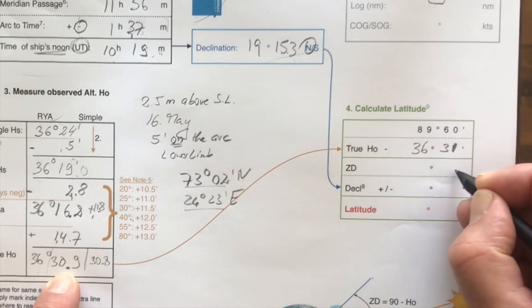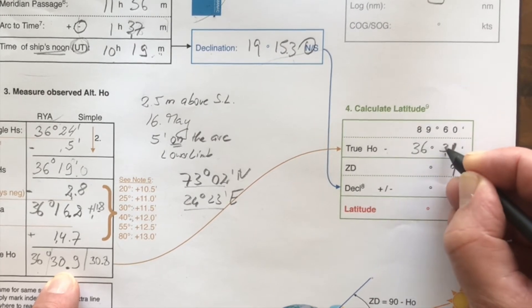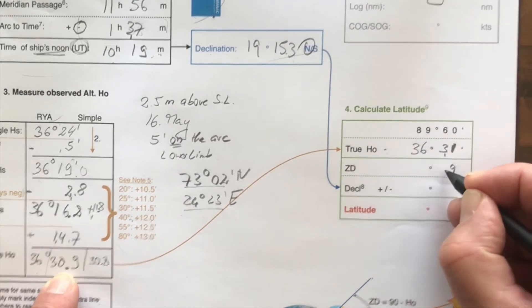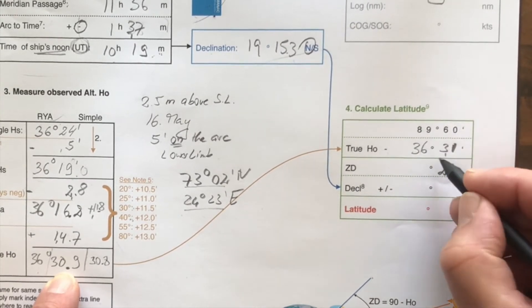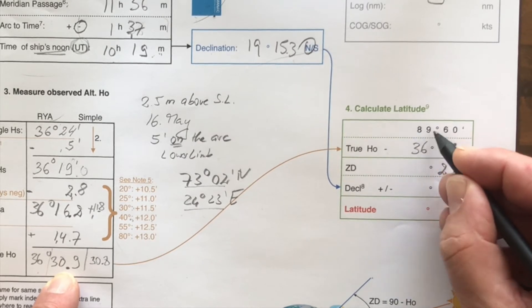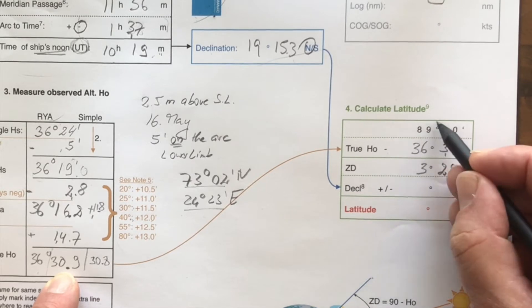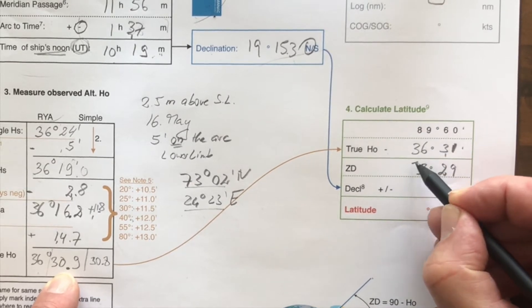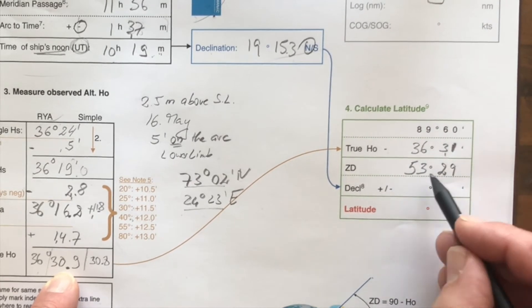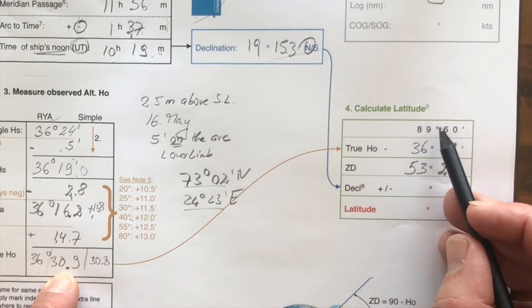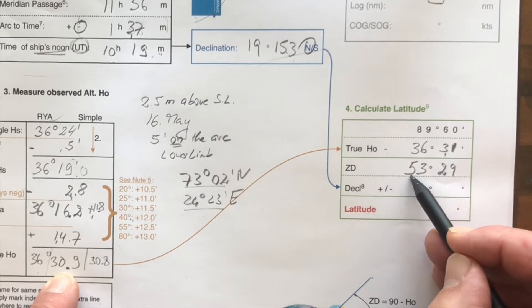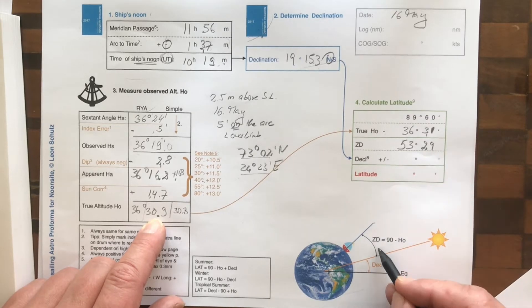So we deduct that. So from 1 to 0, that is 9. From 4 to 6, that is 2. And here from 6 to 9 is 3. And then we have 53. So we have 53 degrees, 29 minutes. That's the zenith distance.